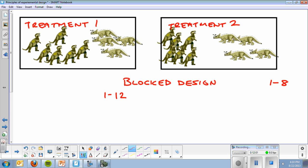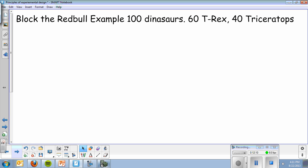Now, you're not going to be drawing dinosaurs on your paper. So this is what it will look like as a test question. Block the Red Bull example with 100 dinosaurs, 60 T-Rex, 40 Triceratops. The first thing I'm going to do is separate them into T-Rex and Triceratops. Then, from there, the rest of it's the same. I'm going to go random assignment of treatment.